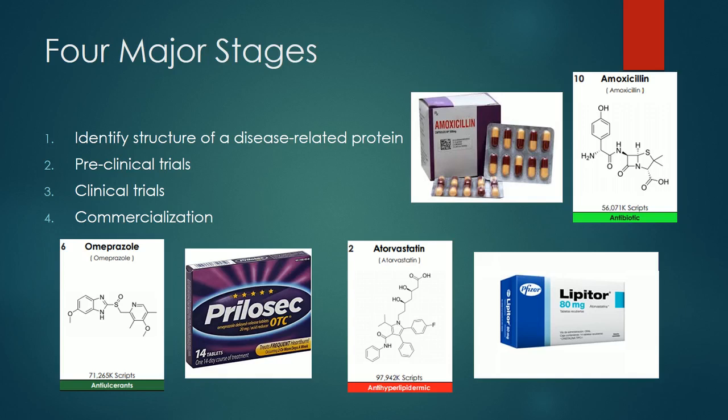Shown here are three commonly used drugs, both with their chemical names and their common names: Atorvastatin, or Lipitor, for cholesterol; Omeprazole, or Prilosec, for heartburn; and Amoxicillin, for antibiotic.